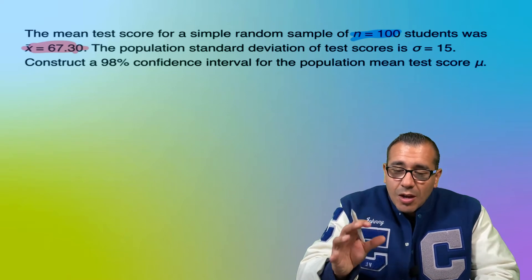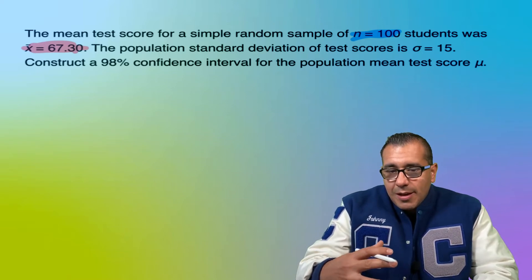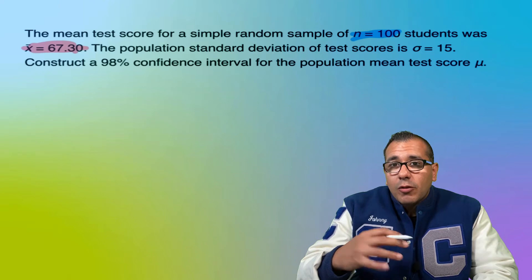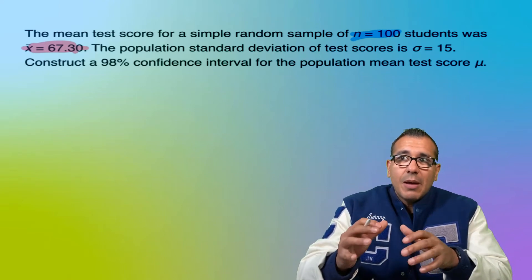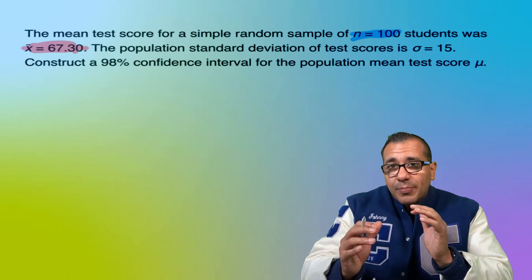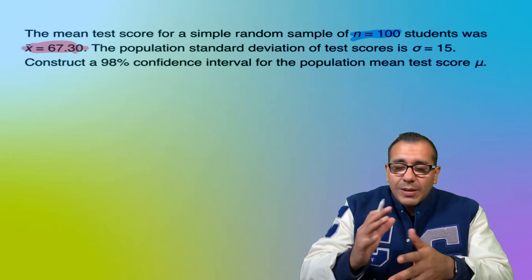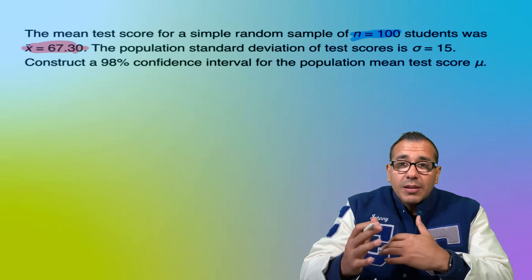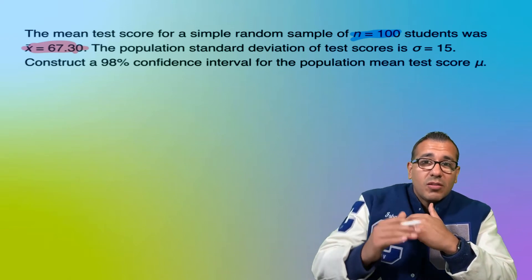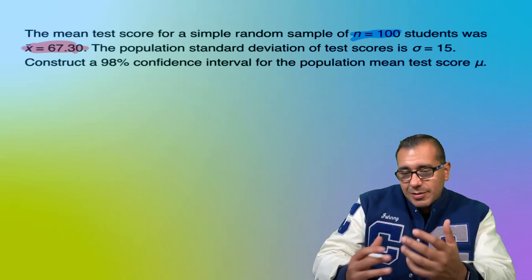And notice when you're trying to find the confidence interval, make sure that this sample is coming from a normal distribution, and if not, make sure your sample size is at least 30. All right, so make sure you read your textbook so that satisfies one of those two conditions. And of course, simple random sample.